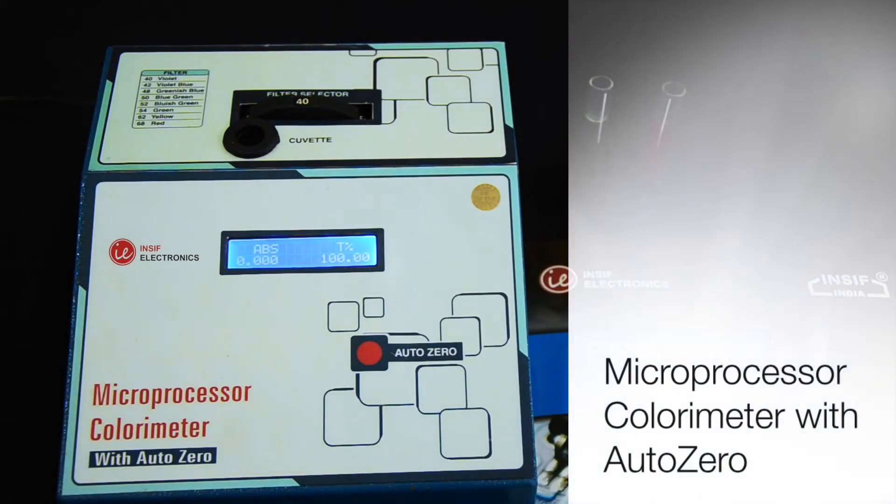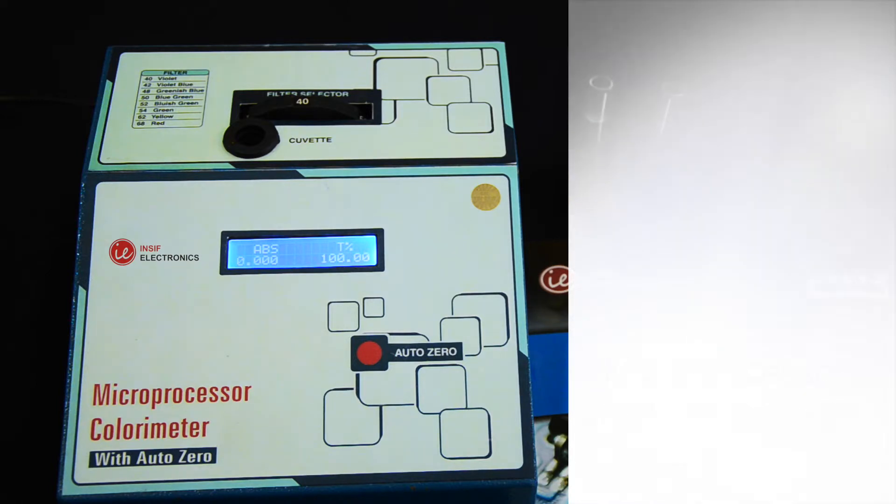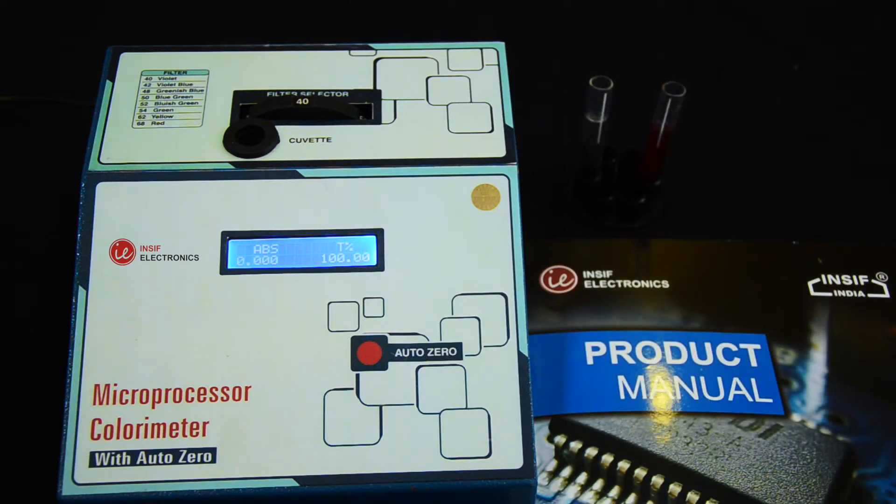We are going to see how to use a colorimeter with AutoZero. The colorimeter with AutoZero is a compact and easy to operate instrument for colorimetric analysis of solutions.